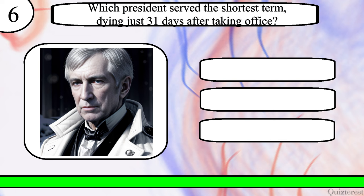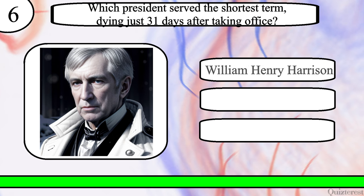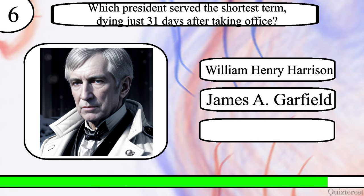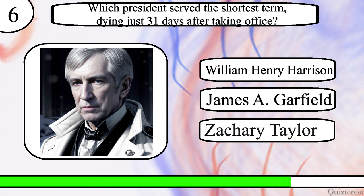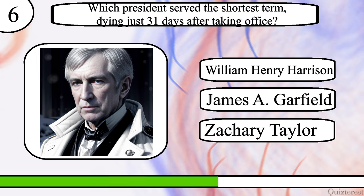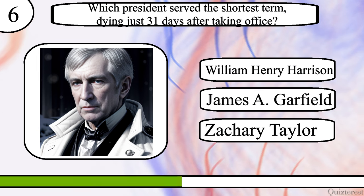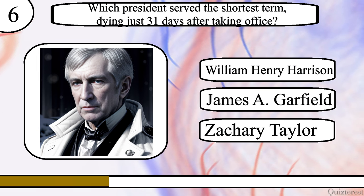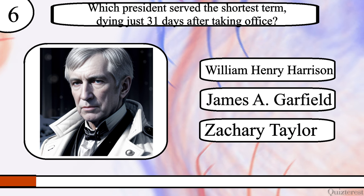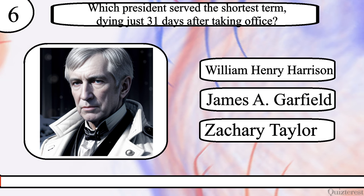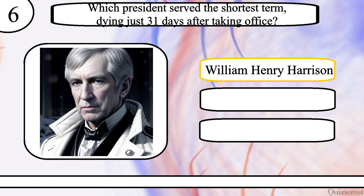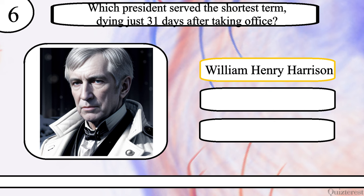Question 6. Which President served the shortest term, dying just 31 days after taking office? William Henry Harrison, James A. Garfield or Zachary Taylor? The correct answer is William Henry Harrison.